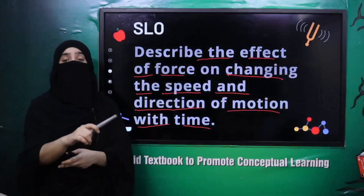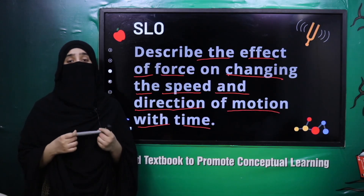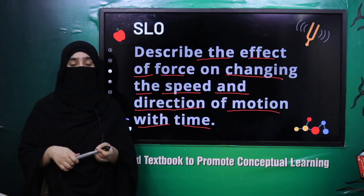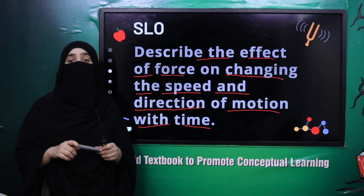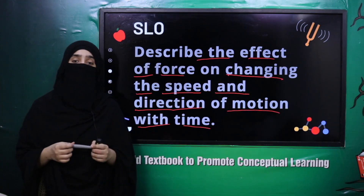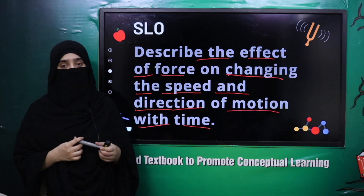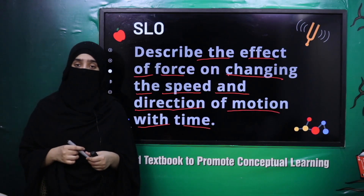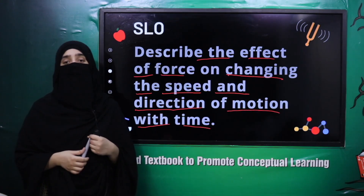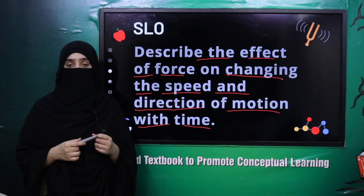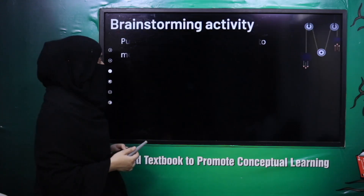Last lecture mein humne dekha what is force and what is the SI unit of force. Aaj hum dekhenge ki force ke jo motion pe effects hain kisi object ki, wo kya hote hain? Kis tarah se force effect karti hai objects ko — ki wo move karein, ya unko movement se rokti hai, ya unki direction change karti hai, speed up ya slow down karti hai, aur unki shape ko change karti hai. Ye saare effects hum is lecture mein dekhenge.